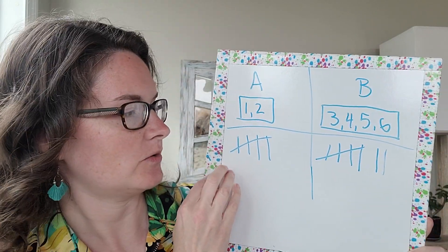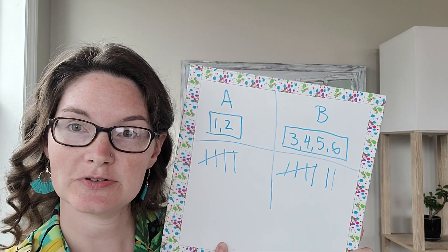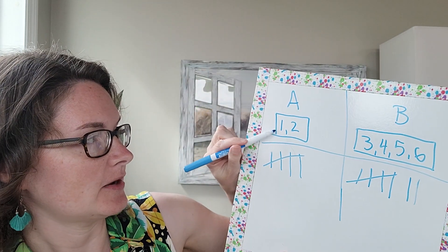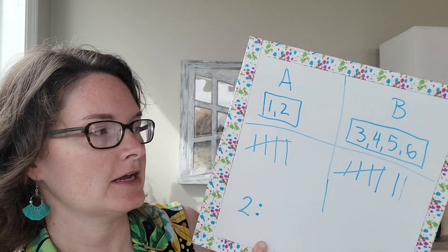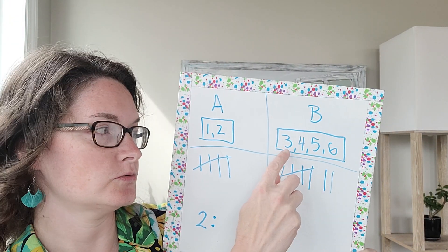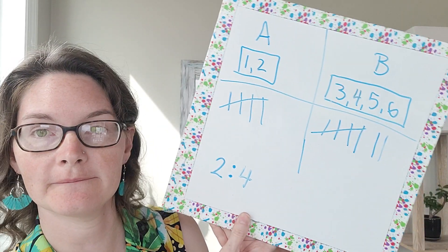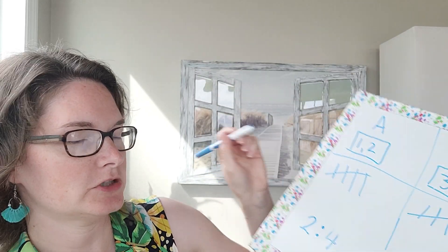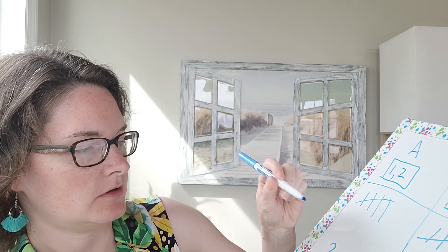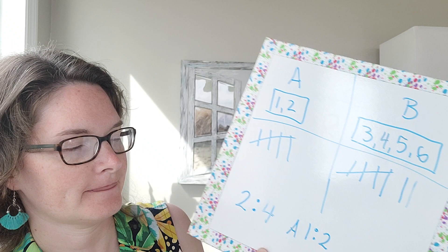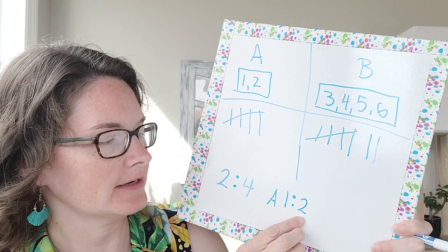To calculate the odds, remember it's wins versus losses. For Group A, how many opportunities are there to win? There are two — one and two. So we put two first, then the colon, then how many opportunities to lose: one, two, three, four. So Group A's odds are 2:4, and if we reduce by dividing each side by two, their odds are 1:2.